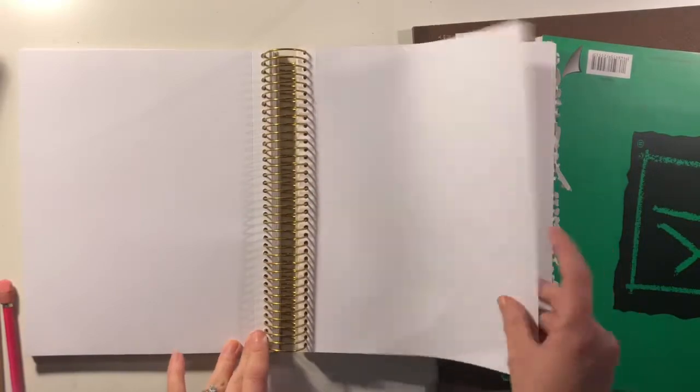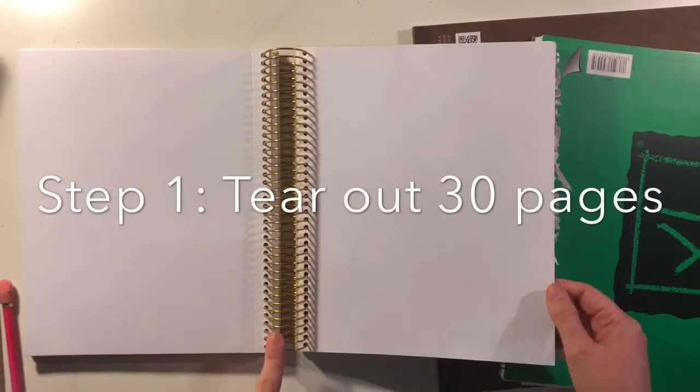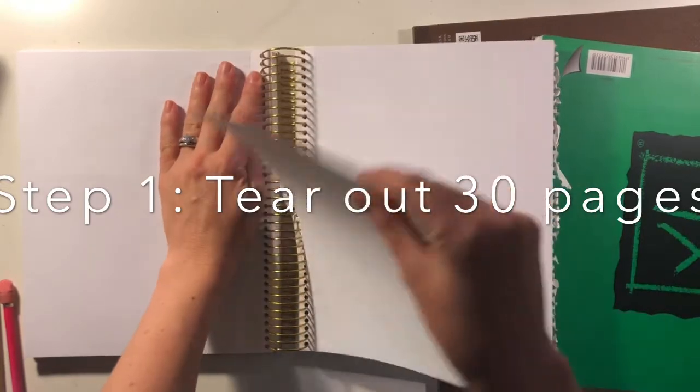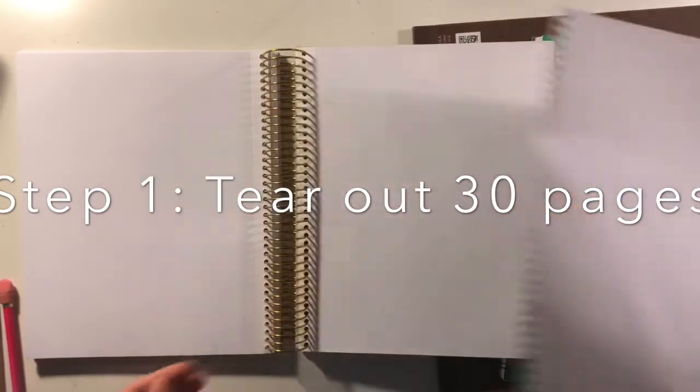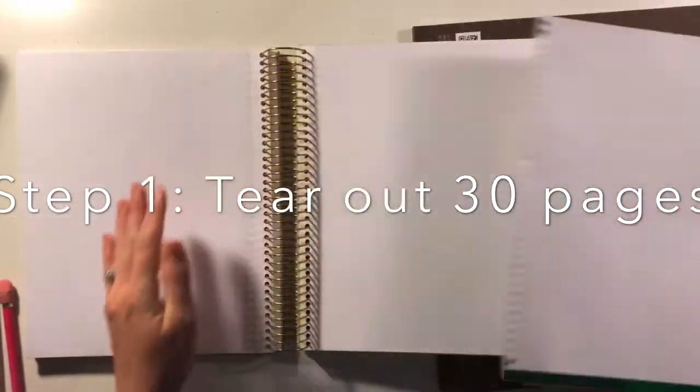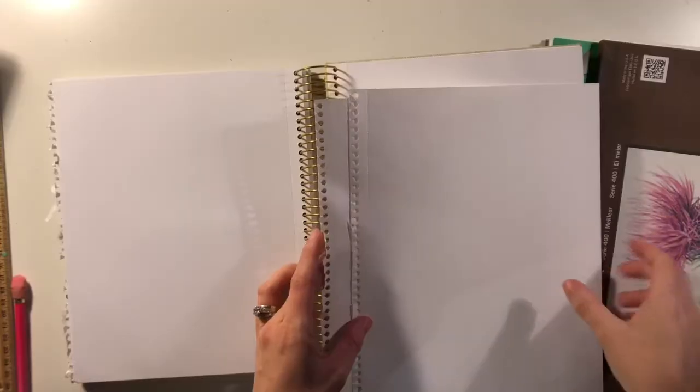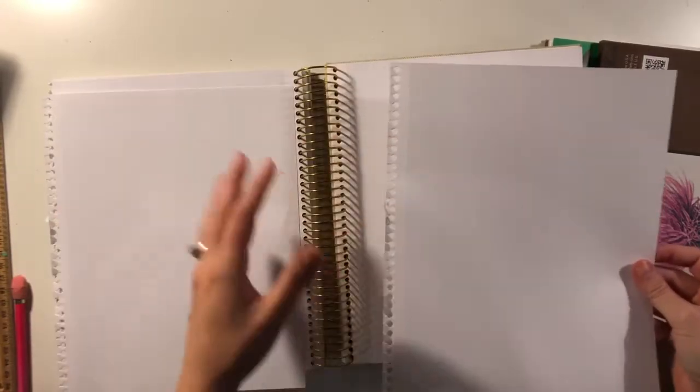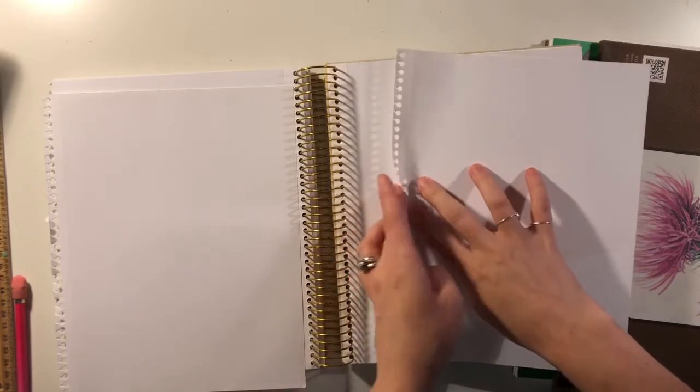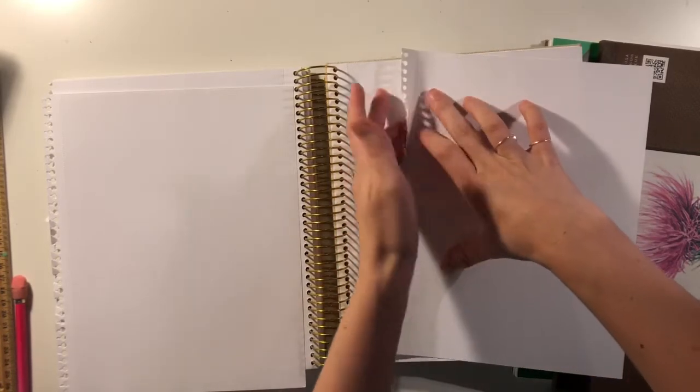You're going to start today if you have a spiral bound by very carefully ripping out 30 pages, and you're going to do that one or two pages at a time. Then once you've got your pages ripped out, there's usually a perforated edge for a spiral bound sketchbook.